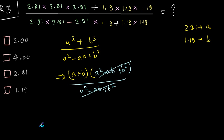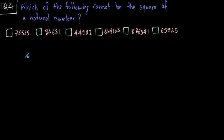These terms get cut out and you remain with A plus B. A is 2.81 and B is 1.19. So 2.81 plus 1.19 and you get the answer as 4.00. So the correct option is this one. Well, that was easy. Let's move on to question 4.